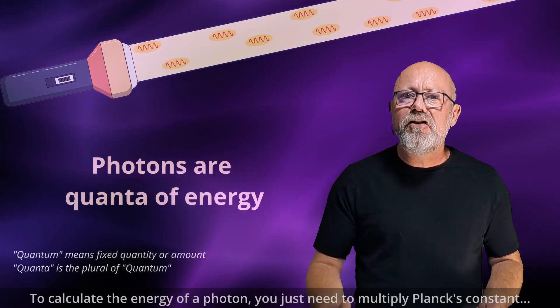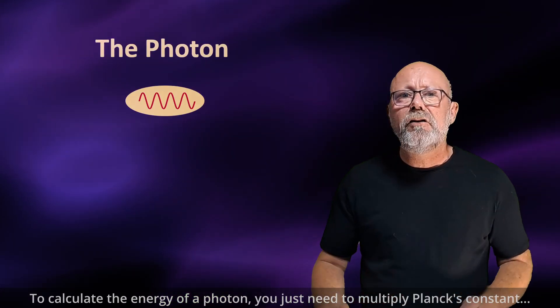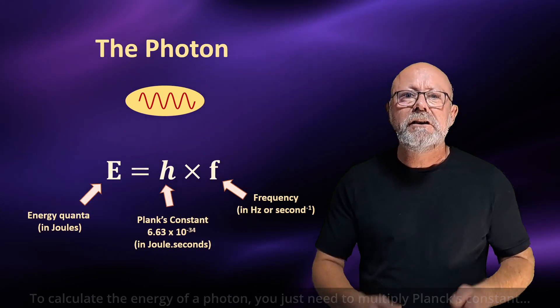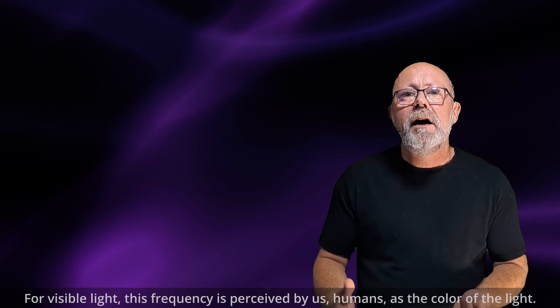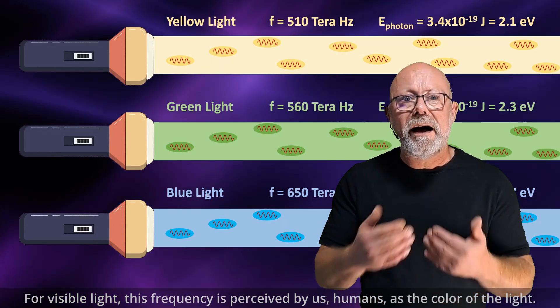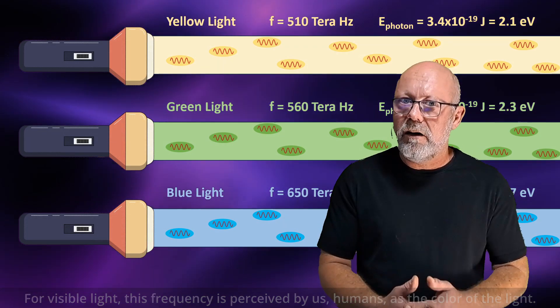To calculate the energy of a photon, you just need to multiply Planck's constant with the frequency associated with that photon. For visible light, for example, this frequency is perceived by us, humans, as the color of the light.